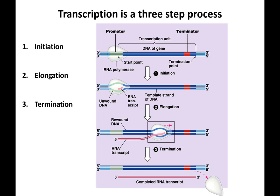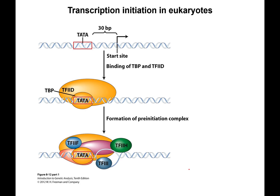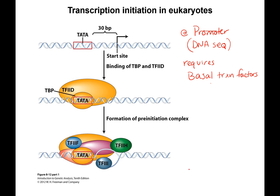Transcription is a three-step process: initiation, elongation, and termination. Initiation starts at the promoter, which is a DNA sequence. It requires the basal transcription factors to bind the promoter, which in turn recruits RNA polymerase 2 to the transcription start site.